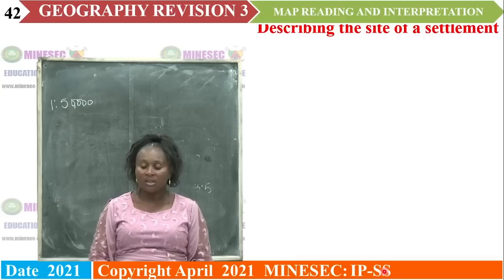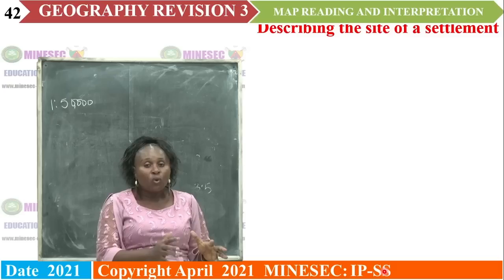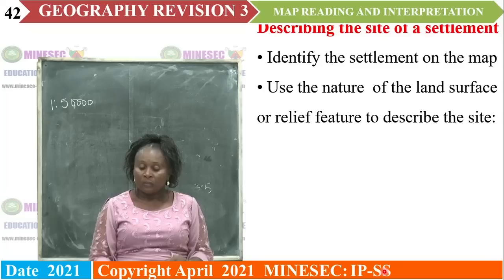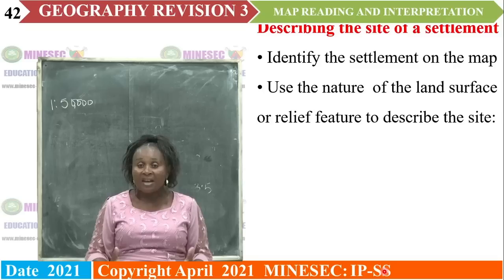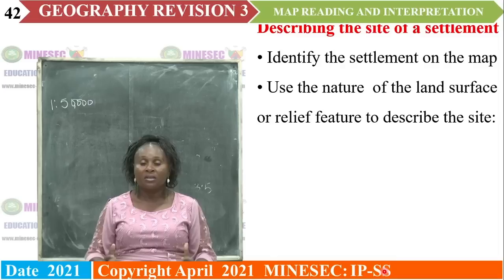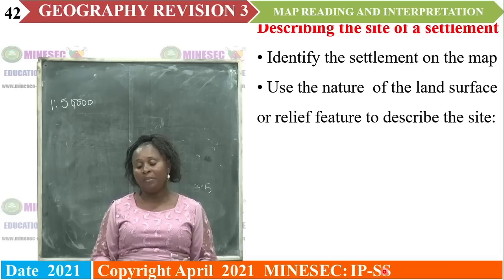Site and situation of the settlement. Site is the actual ground — the actual environment or area where a settlement is found — based on the nature of the land, the alignment of the contours or the physical features found around the settlement. To identify the site, look at the physical features found around that environment by looking at the alignment of the contours.